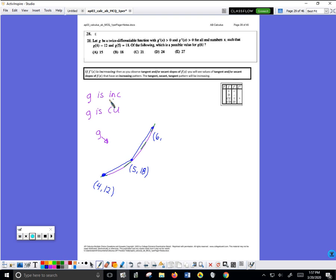21, here's the problem: from this point to this point, the secant slope, so this slope right here.